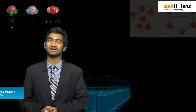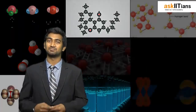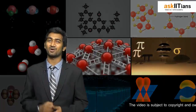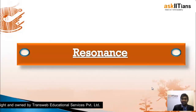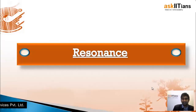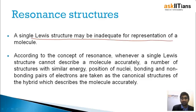Welcome back students. In this part I am going to teach you about the resonance structures in the chemical bonding chapter — which is the most stable structure of all the different chemical molecules. The concept of resonance helps us understand the most stable structures. The need for resonance structures comes when a single Lewis dot structure may be inadequate for representation of a molecule.